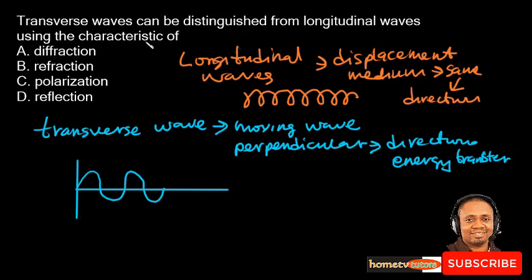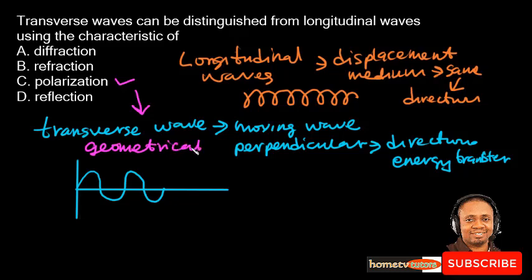Now let's look at the particular characteristic associated with transverse waves that distinguishes them from longitudinal waves. Option A: diffraction. Option B: refraction. Option C: polarization — yes. Polarization is a property applying to transverse waves that specifies the geometrical orientation of the oscillations. So the answer option C is the right answer. Thank you for watching.